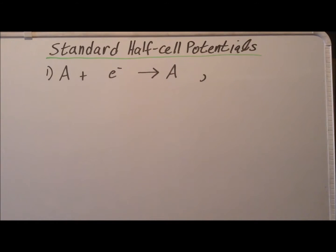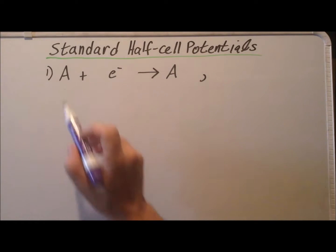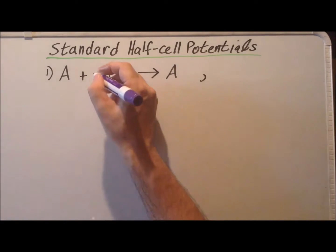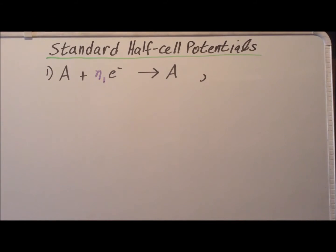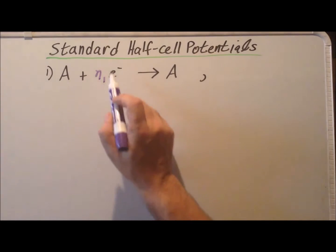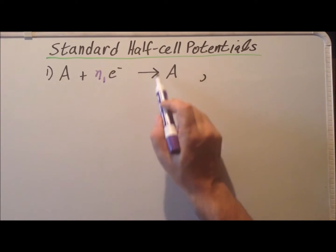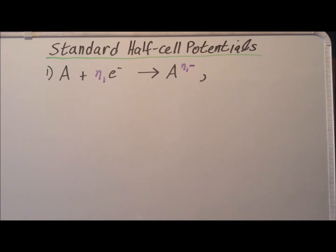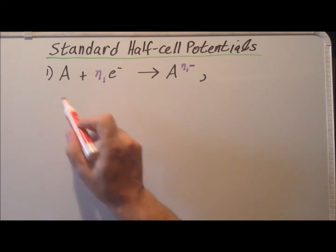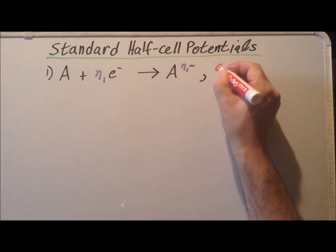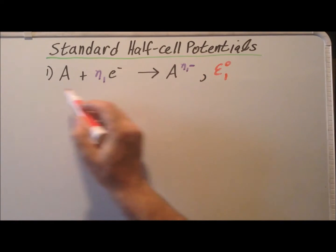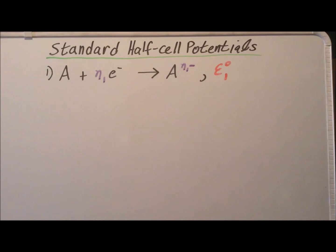For our first half-cell reaction, let's suppose that we have a species A which gains a certain number of electrons — in this case it gains N sub 1 electrons. Since A was neutral and is now reduced, it is going to form an anion with an N sub 1 minus charge. The standard reduction potential for this half-cell reaction is E naught sub 1.